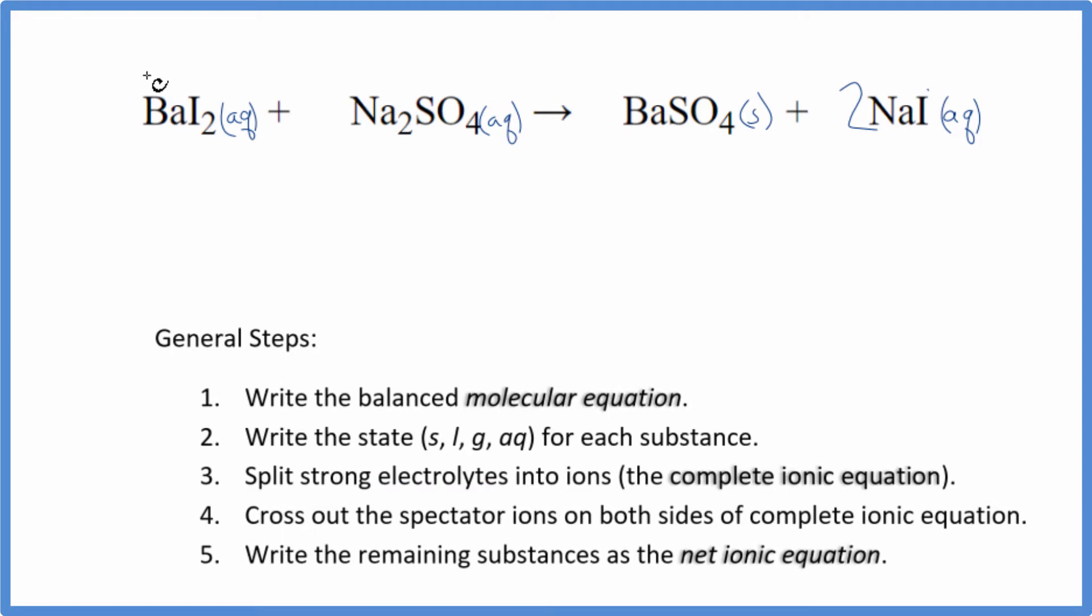Barium's in group two on the periodic table, it's two plus the iodide ion, one minus. So I have Ba2 plus, I won't write the states now, let's do that at the end, plus two of these iodide ions. Then sodium, that's in group one on the periodic table, it's one plus the whole sulfate. That's going to be two minus. So we have two sodium ions, and then we have the sulfate ion. That's SO4, two minus.